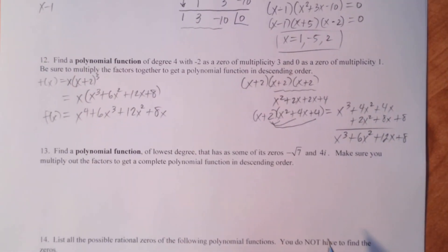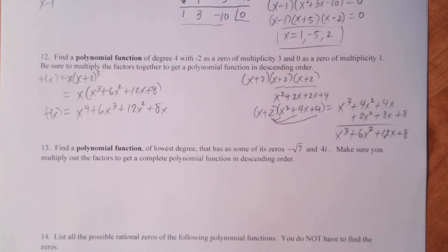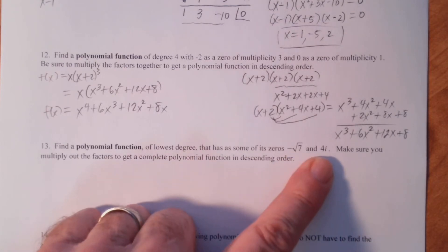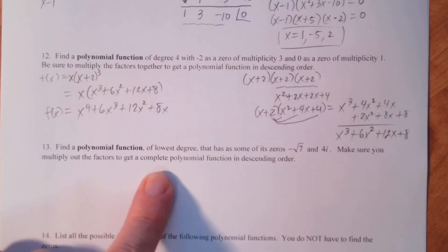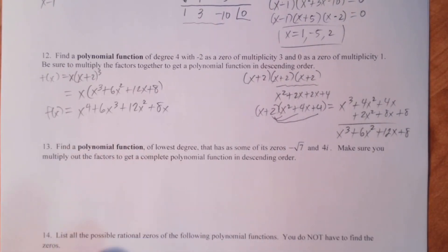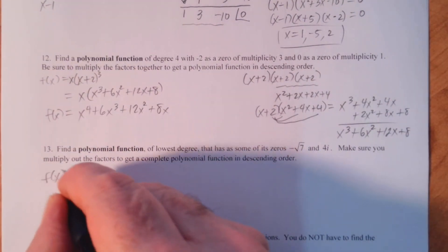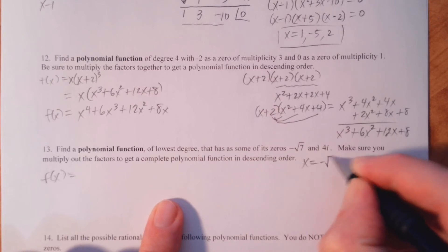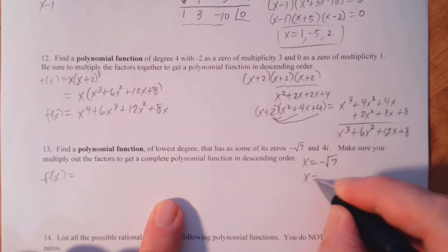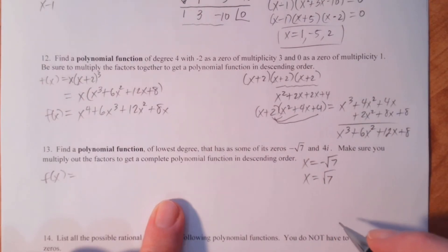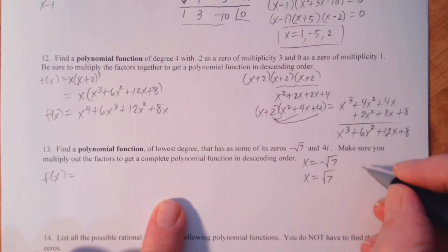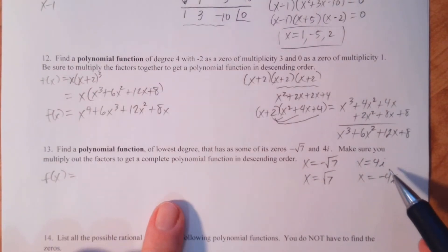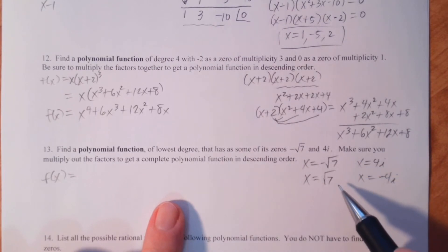On number 13, it says find a polynomial function of lowest degree that has, as some of its zeros, negative square root of 7 and 4i. Make sure you multiply out the factors to get a complete polynomial function in descending order. If we have zeros, we have factors. If x equals negative square root of 7 is a zero, we know its conjugate — positive square root of 7 — is also a zero. If 4i is a zero, we know negative 4i is a zero.